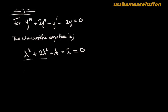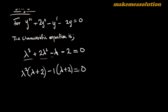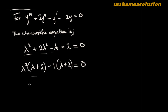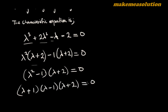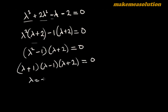In the first and second terms, λ² is common, so we get λ²(λ + 2). In the third and fourth terms, -1 is common, so we get -1(λ + 2) = 0. Factoring out (λ + 2) gives (λ² - 1)(λ + 2) = 0. Applying the difference of two squares, this becomes (λ - 1)(λ + 1)(λ + 2) = 0.